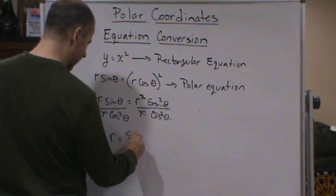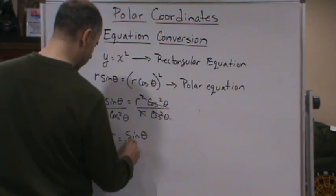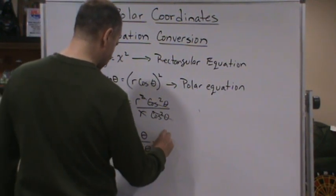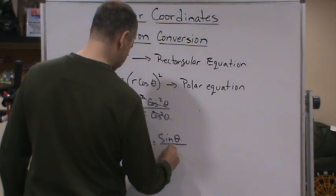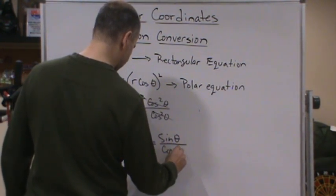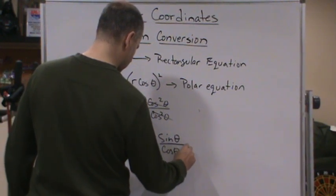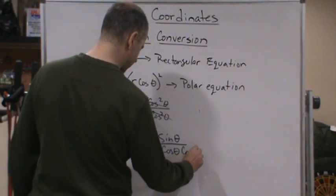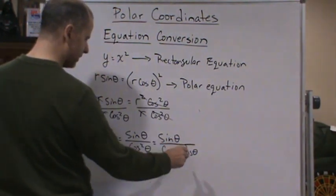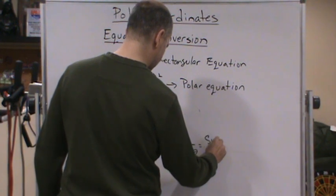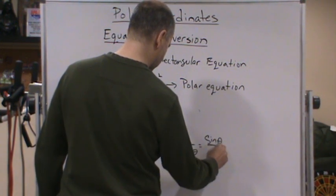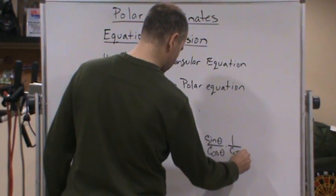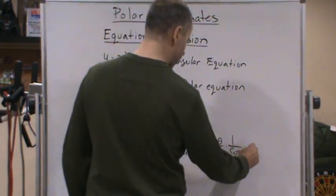Which is equal to sine theta over cosine theta. We could split this up, and this is going to be sine theta over cosine theta times one over cosine theta. And then we finally get tangent theta secant theta.